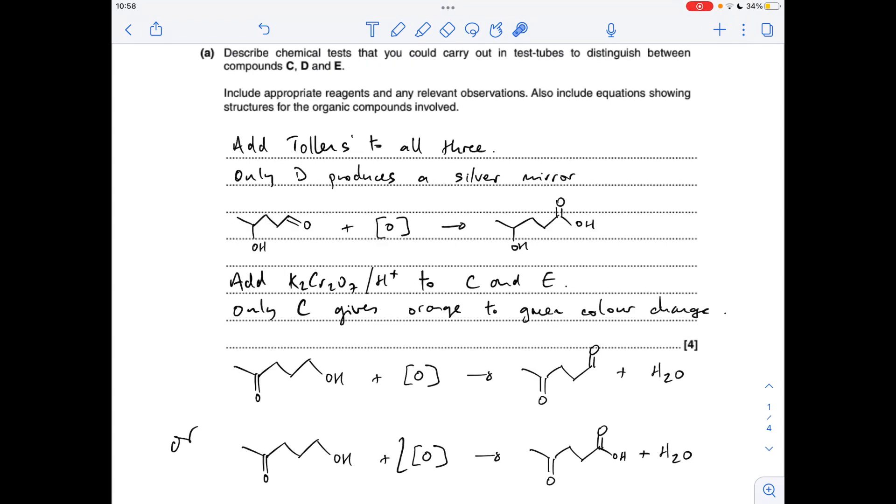So for the next part obviously you're left with compounds C and E, so you would add acidified potassium dichromate to those two. Only C can be oxidized because it's got this primary alcohol group so it's going to give an orange to green color change. You can either oxidize the primary alcohol just to the aldehyde group, so your equation would look like that, alternatively you can oxidize it all the way to the carboxylic acid group in which the equation looks like that.